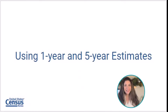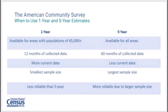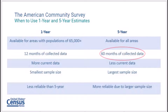Now let's discuss the differences between one-year and five-year estimates. When data users are selecting data for a specific geography, they may be confused as to whether they should use the one-year or five-year estimates. First, data users must remember that one-year estimates are only available for geographic areas with population sizes of 65,000 or more and represent 12 months of collected data. The five-year estimates are available for all geographic areas, regardless of the population size, and represent 60 months of collected data.